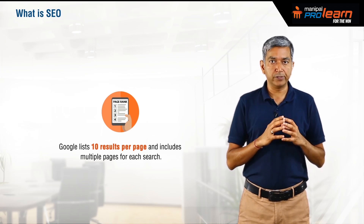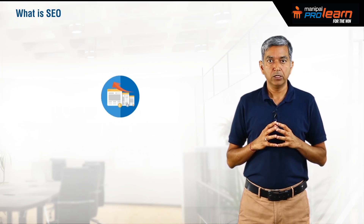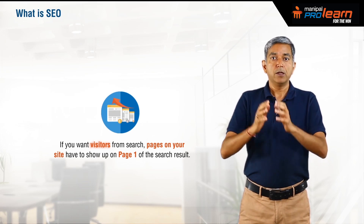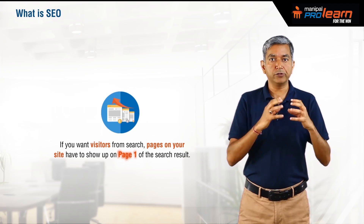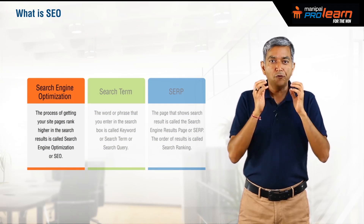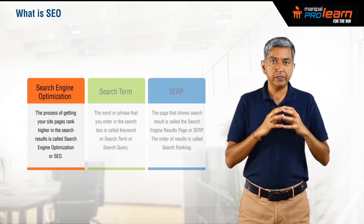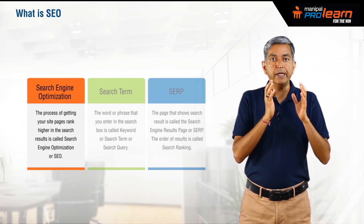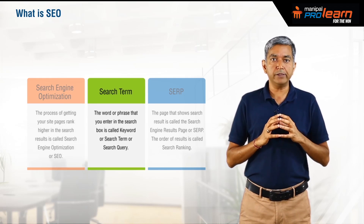Google lists 10 results per page and includes multiple pages for each search. A typical user never goes beyond page three of the search results, and most people don't go beyond page one. So if you want visitors from search, your site's pages have to rank on page one of search results. The process of getting your site's pages to rank higher in the search results is called Search Engine Optimization, or SEO.